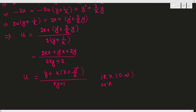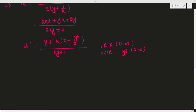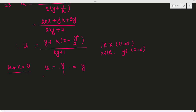Let's check for the given values of k. For the first option, when k equals 0, we get u equals y plus 0 divided by 0 plus 1, giving u equals y. So the solution exists in the given region for all values of y where y belongs to (0, ∞).